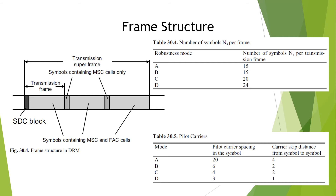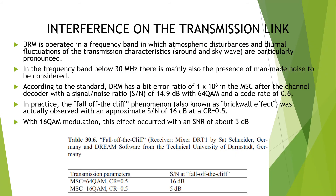Pilot carriers, or pilot cells, are distributed over the entire range of COFDM carriers. Depending on the mode, they are spaced apart by 20, 6, 4, or 3 carriers from one another, and skip forward by 4, 2, or 1 carrier from symbol to symbol.